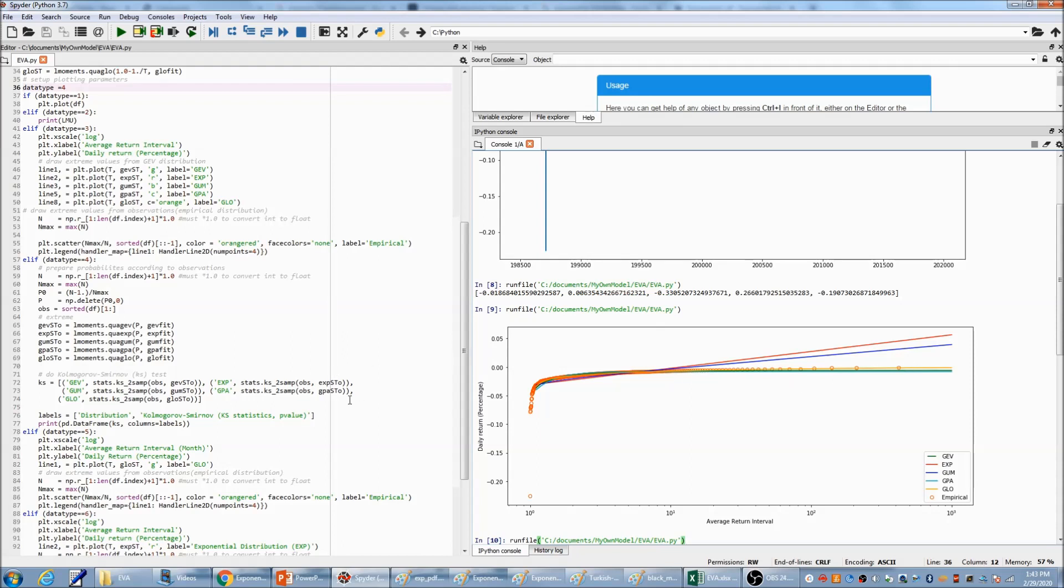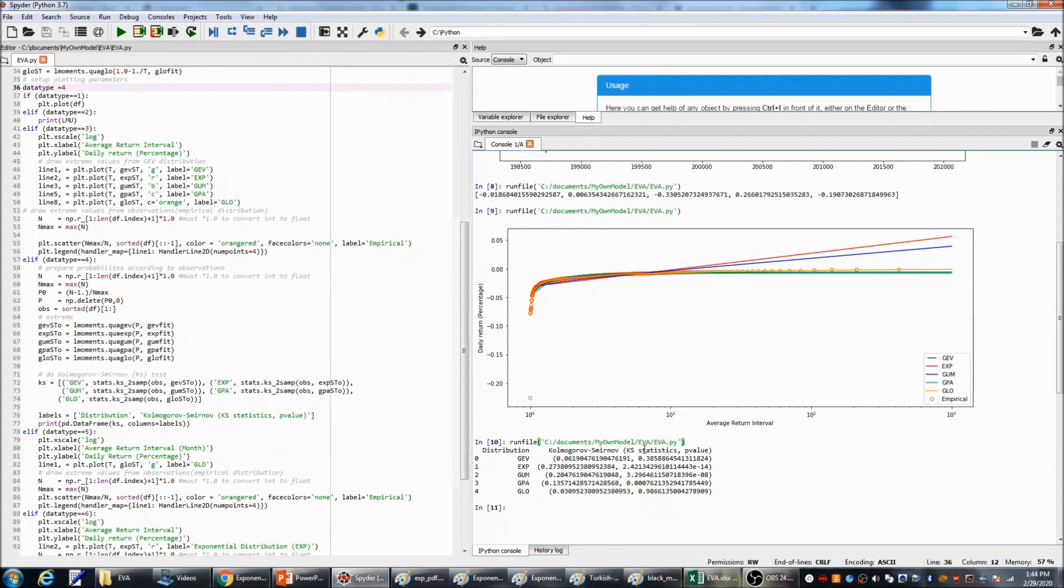Now, if we run the KS test, we can check the p-value. You can see the generalized logistic distribution has p-value 0.9866, which is the largest one. The smallest one is exponential distribution, because it has a power of negative 14.